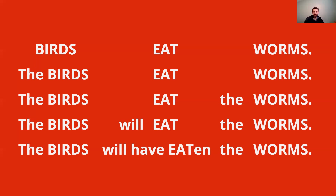First: 'Birds eat worms.' Second: 'The birds eat worms.' Third: 'The birds eat the worms.' Fourth: 'The birds will eat the worms.' And finally: 'The birds will have eaten the worms.' In each case, those function words like 'the' or 'will,' or even the extra syllable 'eaten,' get squished into the stressed word and each part takes almost the same amount of time.